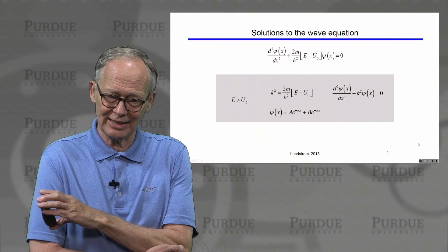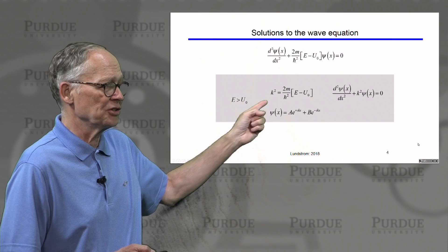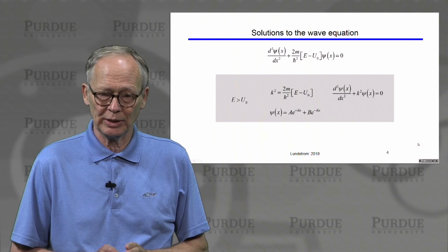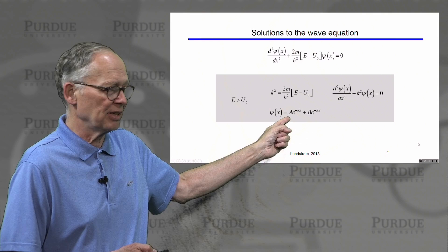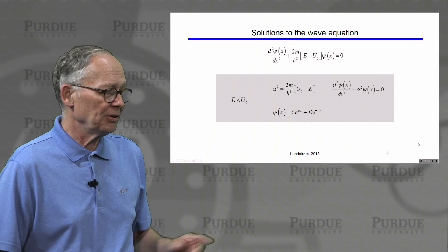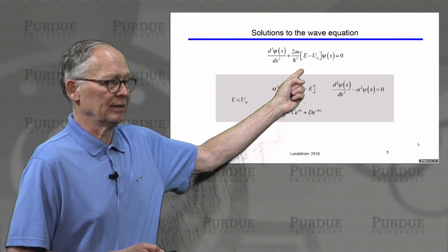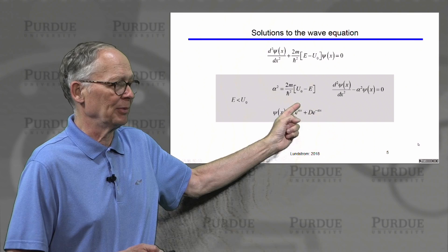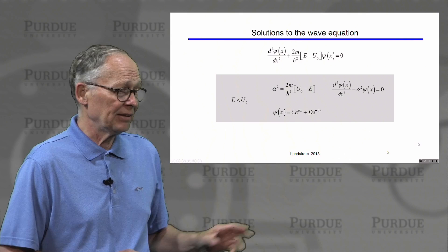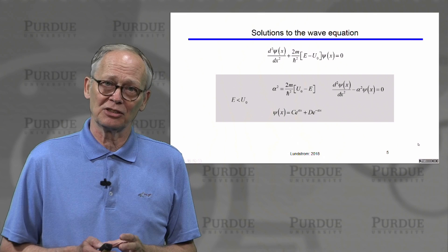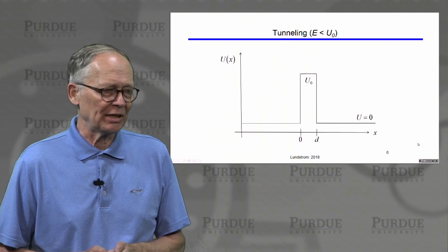To understand these phenomena, we begin with the time-independent wave equation. When the energy is greater than the potential energy, we write it in terms of k squared, and the solutions are waves in the plus x or minus x direction. On the other hand, if the energy is below the top of the barrier, this quantity is negative. We rewrite the wave equation in terms of a parameter alpha, where alpha squared is positive, and the solutions are either exponentially growing or exponentially decaying functions of position.